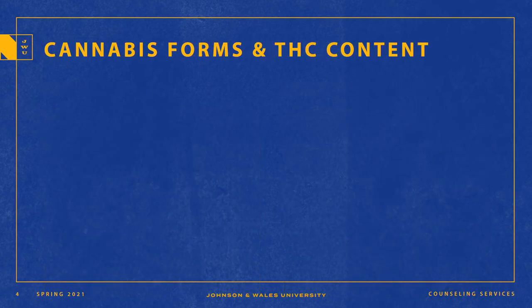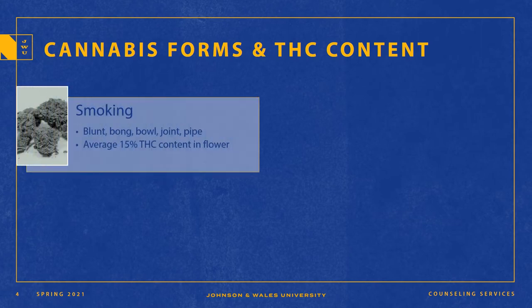Let's take a brief look at the forms cannabis comes in and the THC content of that cannabis. First, the traditional marijuana flower. If someone is smoking this, you could expect the average THC content to be around 15%. The THC content is the percentage of THC in the plant, which is the psychoactive substance that causes the high and also causes functional impairments over time.